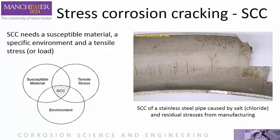The most important of the chemo-mechanical phenomena is known as stress corrosion cracking. This requires a susceptible material, a tensile stress, and a specific aggressive environment. For stainless steel, the presence of even small amounts of chloride ions from salt in the water can result in the sort of damage shown in the picture. Each of the vertical brown lines is a crack resulting in a leak out of the pipe, and the stresses from bending the pipe to shape during manufacture have contributed to this failure.